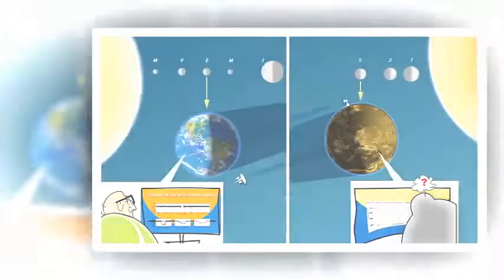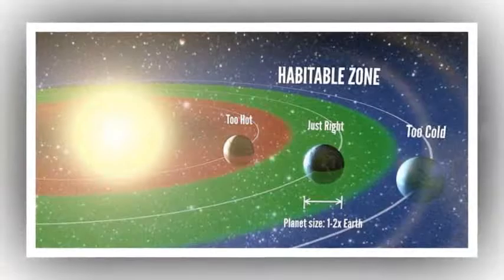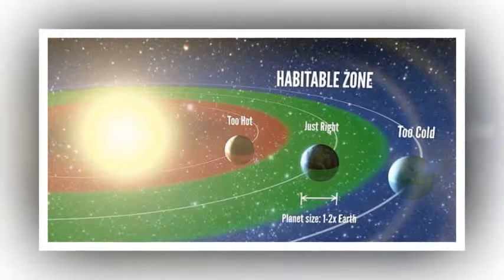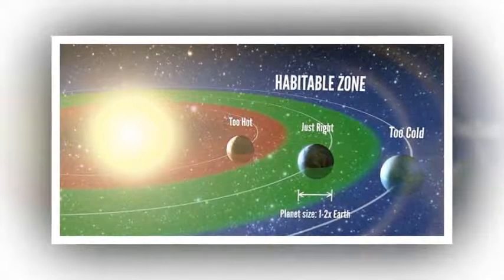The outermost planet orbits in the Goldilocks Zone, a region where surface temperatures could be moderate enough for liquid water and perhaps life to exist.